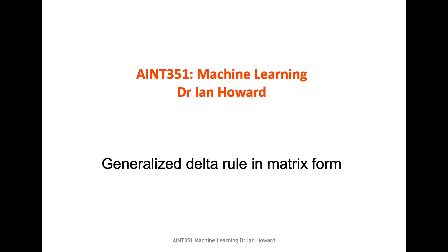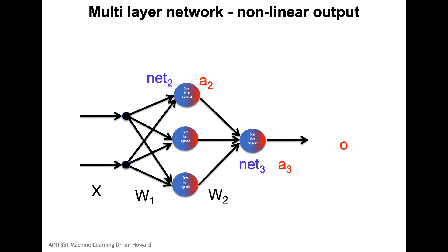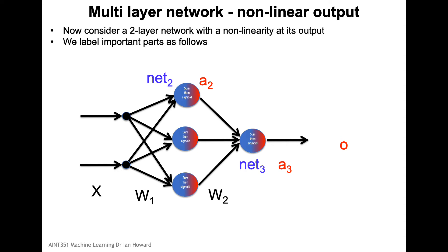Now I'm going to discuss the generalized delta rule, which is basically the learning rule we need to train multi-layer networks. We're just going to consider a two-layer network here, with one hidden layer and a linear and nonlinear output. Let's label the important parts.